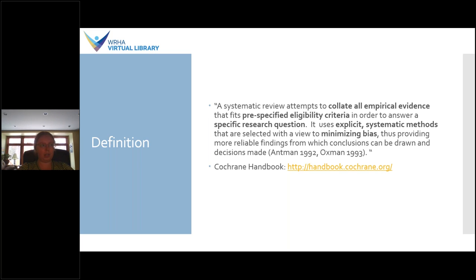Another important component is that a systematic review is designed to minimize bias — partly by collecting all available evidence, but also by performing a quality assessment of that evidence, assessing how likely it is that an individual study included in the review is subject to bias. That's a really important component in determining how appropriate it is to base conclusions off a particular study, and then drawing all these studies into a concise conclusion from which decisions can be made regarding particular interventions.